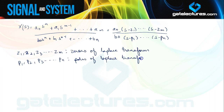For all values of s equal to the zeros of the Laplace transform, the value of the Laplace transform is going to be 0. For all values of z₁, z₂, z₃, the Laplace transform is going to have value 0. And for all values of p₁, p₂, p₃ — that is, at s equal to the poles of the system — the value of the Laplace transform is going to be infinity.